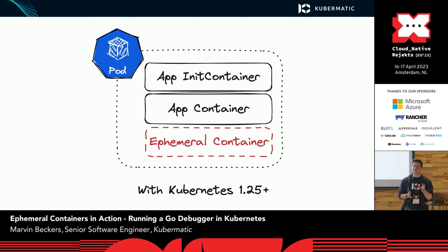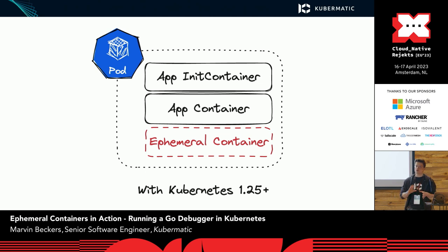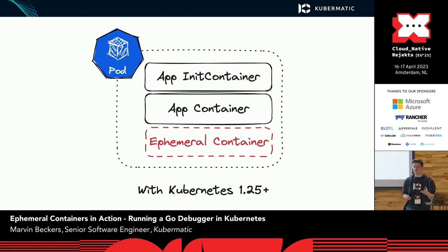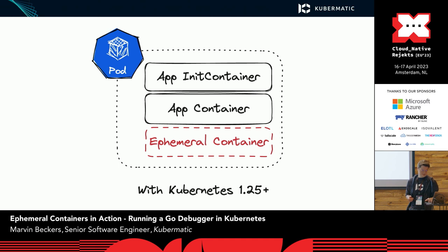With Kubernetes 1.25, the ephemeral containers feature reached GA, changing the situation significantly. Now you can launch — as they're called — ephemeral containers into your running pods. That is a huge change, because once you've created a pod you normally can't change its containers and what they're supposed to run. This allows us to launch ephemeral containers that run alongside our main containers on the same node.